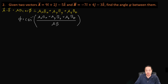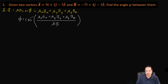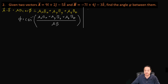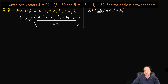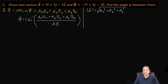We already have the components, so we know AX BX, AY BY, AZ BZ — but we don't yet know the magnitudes of A and B. First let's calculate those. The magnitude of A is going to be equal to the square root of AX squared plus AY squared plus AZ squared. This is the Pythagorean theorem for three dimensions.